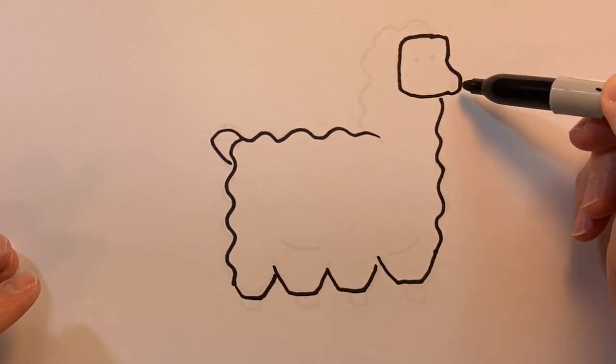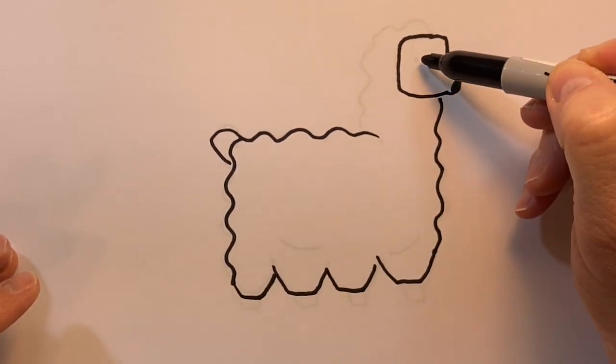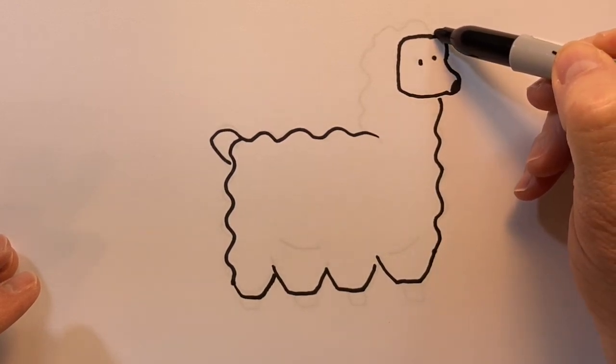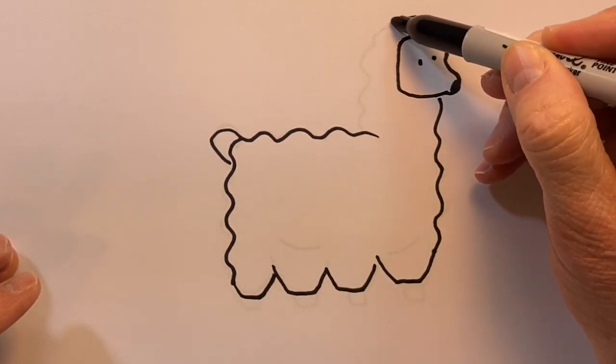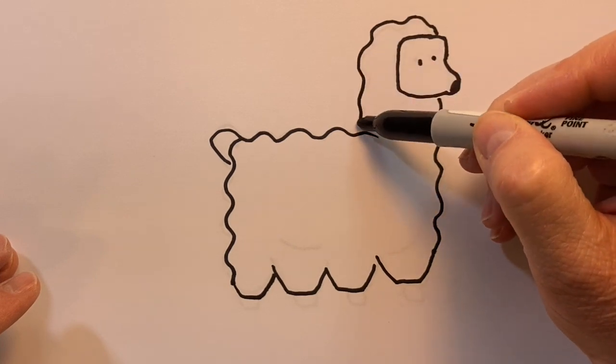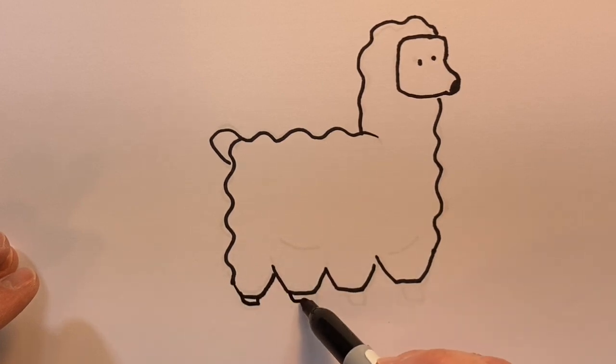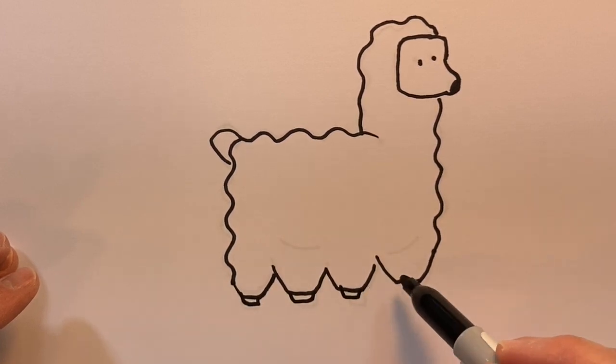Form the snout of the llama in that gap, then bring the wavy line up and down to attach to the rest. Finally, form some little hooves for the llama.